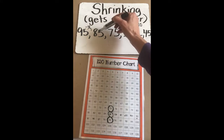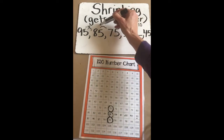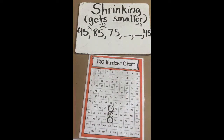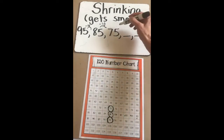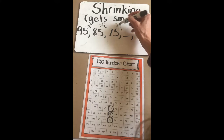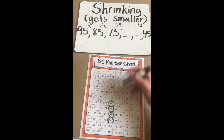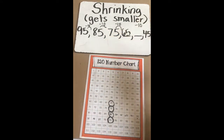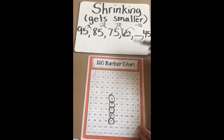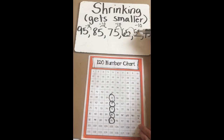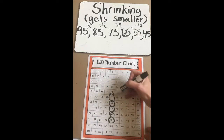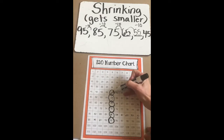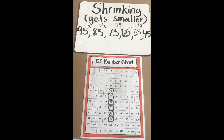95 take away 10 equals 85. 85 take away 10 equals 75. Let's use that rule to figure out the next numbers. 75 take away 10 is 65. 65 take away 10 is 55. And our last number is 45, which is 10 less than 55. So we did it — that was a shrinking pattern that gets smaller and our rule is 10 less.